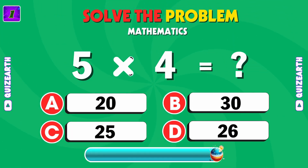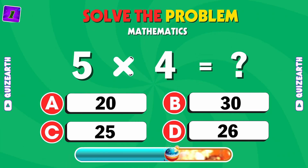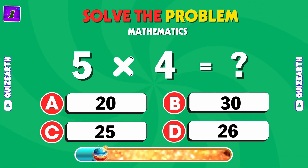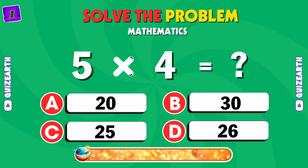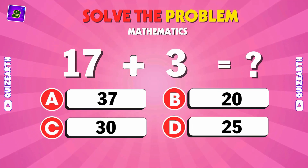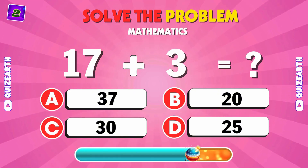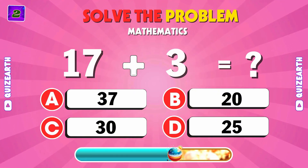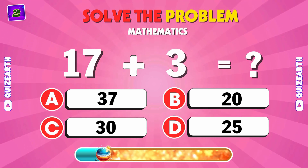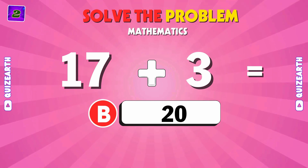Multiplying time. What is 5 times 4? A: 20. Addition time. What's 17 plus 3? B: 20.